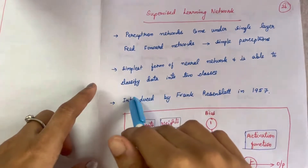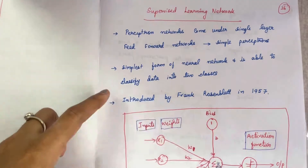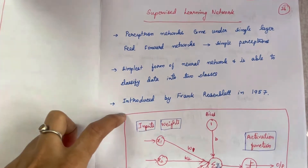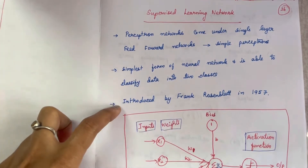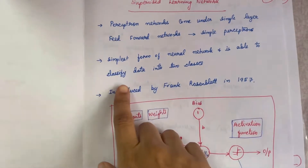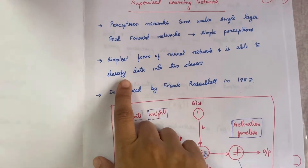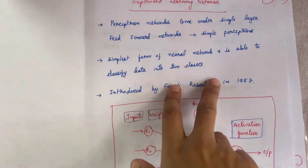In this video I will be explaining to you the architecture of perceptron neural network, the training algorithm, and the flowchart. This perceptron neural network is mainly used for classifying the data into two classes.